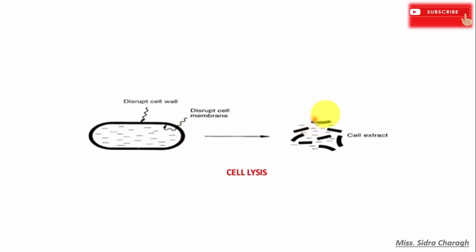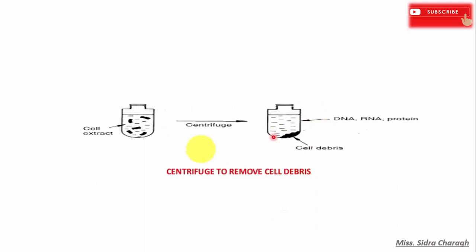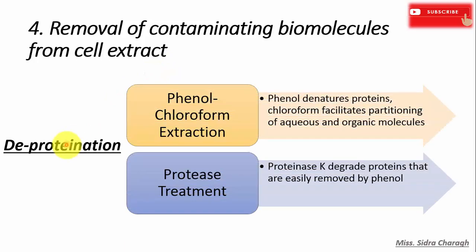After cell lysis by mechanical or chemical disruption, we obtain a cell extract. We then centrifuge the Eppendorf tube and get cell debris at the bottom, while DNA, RNA, and protein are suspended in the supernatant. The fourth step is removal of contaminating biomolecules from the cell extract, where we perform a deproteination step.